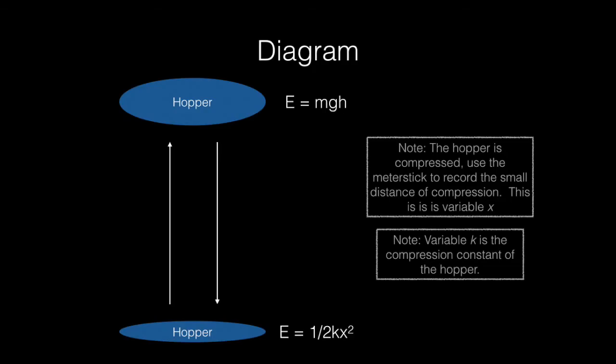It is important to note that the energy of the hopper, when compressed, can be noted as 1 half kx squared, where k is the elastic constant of the hopper and x is the compression of the hopper.